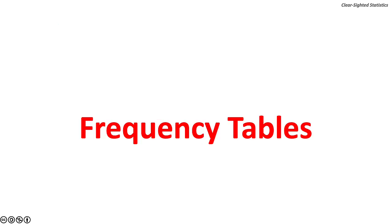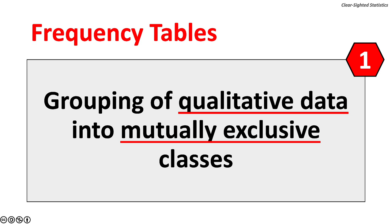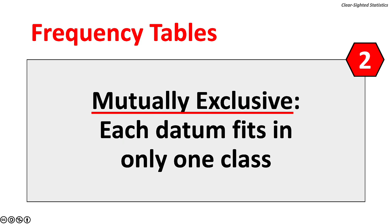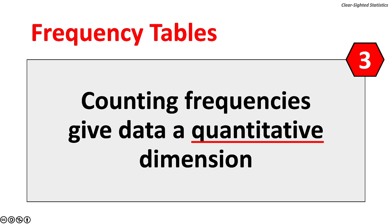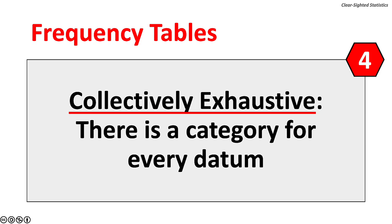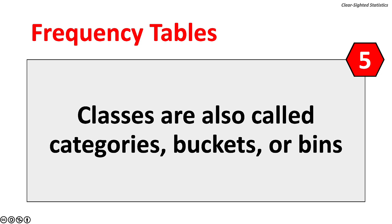Let's turn to frequency tables. There are five points to remember. One, frequency tables are a grouping of qualitative data into mutually exclusive classes. Two, mutually exclusive means that each data fits into only one class. Three, counting frequencies gives the data a quantitative dimension. Four, frequency tables are collectively exhaustive — there is a category for every datum. Datum is the singular of data; a datum can also be called a variable. Five, classes are also called categories, buckets, or bins.